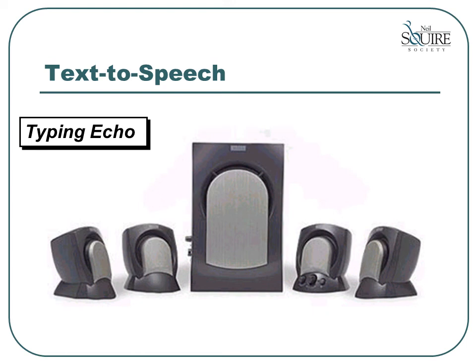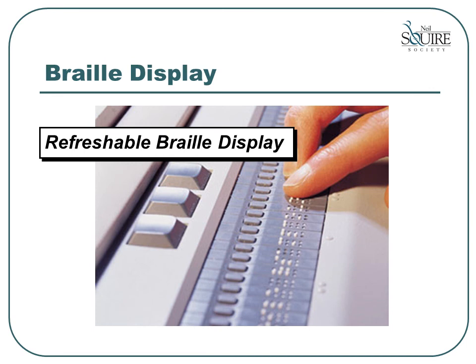If you have any difficulties with typing, spelling, or writing, these options can help you to improve your skills. For someone with a vision impairment who has learned Braille, there is another option: a refreshable Braille display. This interesting piece of hardware sits in front of your keyboard and is comprised of a grid of small holes with moveable pegs that pop up and down, allowing someone to run their finger along it and read Braille. The Braille letters continue to refresh as the person reads down the text on screen.